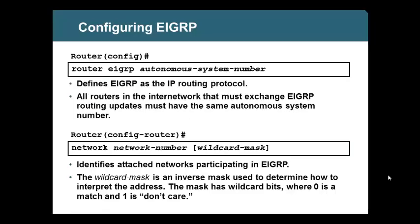We typed this command — you remember that, right? Router EIGRP 100. What is that 100? That's the autonomous system number. Even if you have only one EIGRP autonomous system in your office, you must put some number to identify that autonomous system. Without a number, it can't be configured.